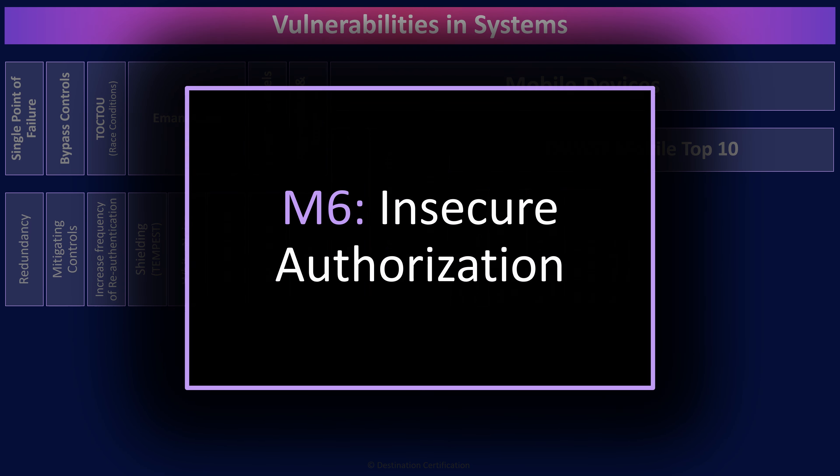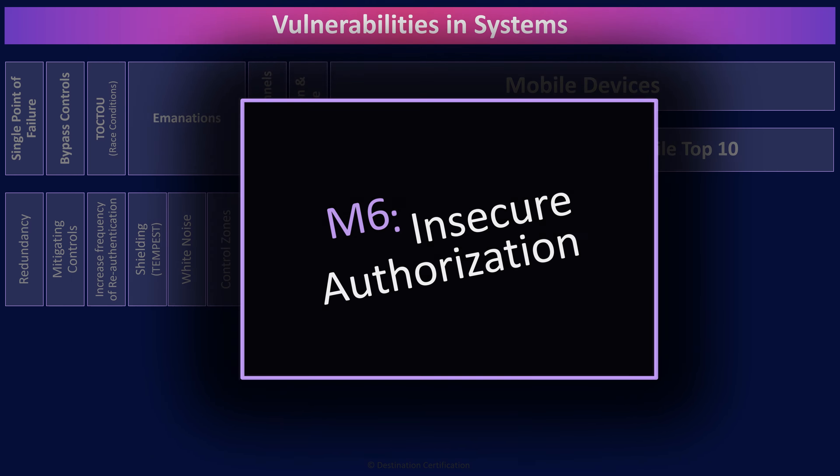Insecure authentication refers to an attacker figuring out how a mobile application calls the backend server it is connected to. Once the attacker figures this out, they bypass the app and send requests directly to the server, bypassing the authentication mechanisms built into the mobile app. To prevent this vulnerability, perform authentication on the server side. Authorization is where a system determines what functionality a user will be allowed to access. The insecure authorization vulnerability therefore refers to doing a poor job of this authorization step, potentially allowing an attacker to bypass the authorization and grant themselves access they are not entitled to. To prevent this vulnerability, authorization should be performed by the backend server and not the mobile device, and the server should verify that any requests from a mobile device are permissible based on what the user is authorized to access.